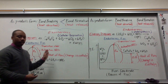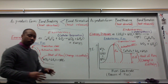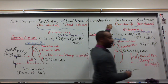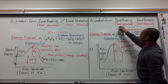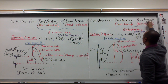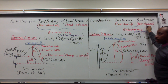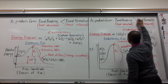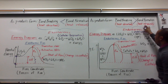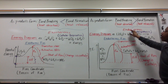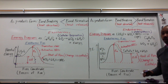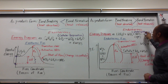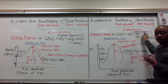Let's look at the opposite. As products form, we break bonds — heat is absorbed. We form bonds — heat is released. Now, if the heat absorbed in the beginning is greater than the heat that's released, it's an endothermic process. We see this naturally in nature in the process of photosynthesis when we look at plants.